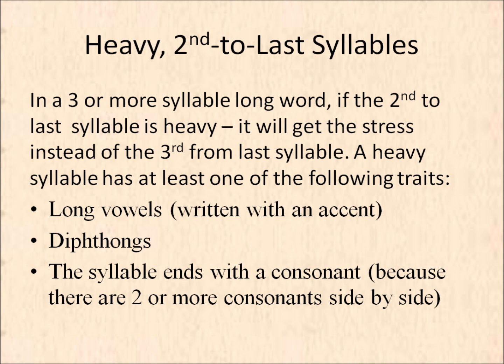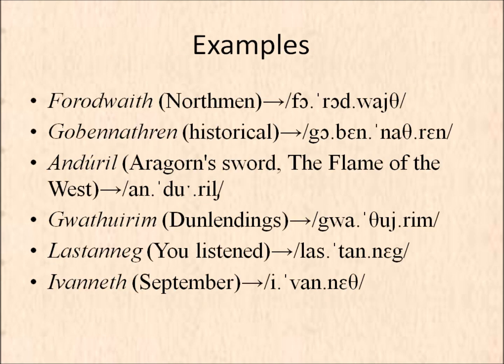A heavy syllable has at least one of the following traits: long vowels — that is, a vowel written with an accent — diphthongs, or if the syllable ends in a consonant because there are two or more consonants side by side.